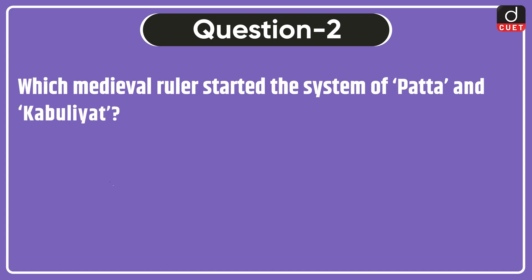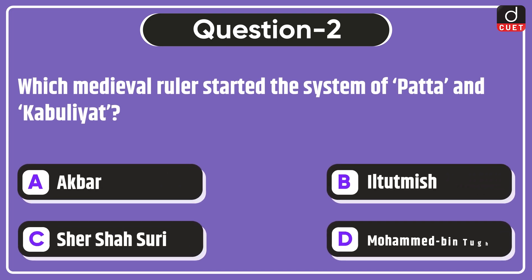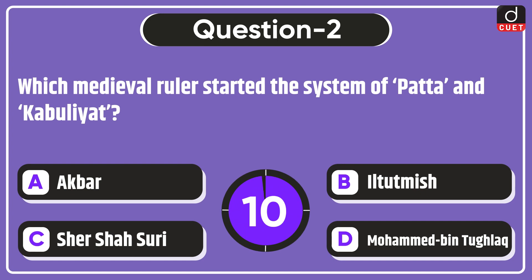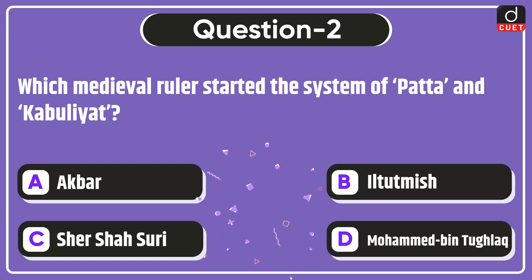Next question: which medieval ruler started the system of Patta and Kabuliyat? Akbar, Iltutmish, Sher Shah Suri, or Mohammed bin Tughlaq? The correct answer is option C — Sher Shah Suri.